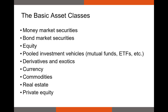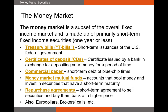The first asset class is the money market, which refers to the market for any short-term asset. In finance, we typically define short-term as one year or less. Medium term is often one to five or one to ten years, and long-term is anything with a maturity beyond ten years. Any security that matures in a year or less is a money market security — this includes T-bills, the short-term debt of the US federal government.